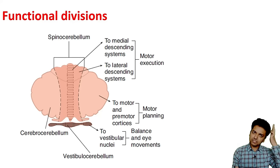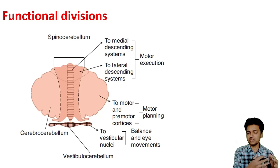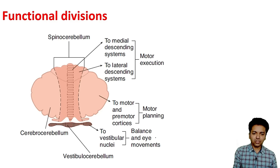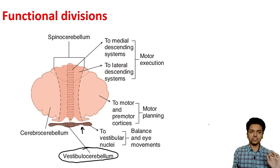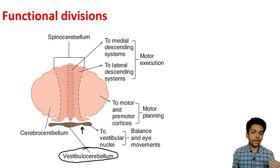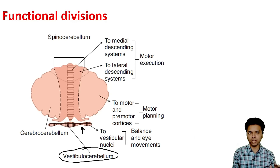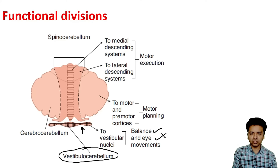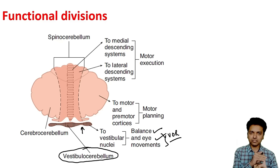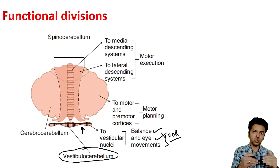The anatomical divisions are entirely different from the functional divisions. Only one thing is similar — the flocculonodular lobe is now called the vestibulocerebellum. It is called so because this part has extensive connections with the vestibular apparatus and vestibular nucleus. Its main functions are maintenance of balance and the vestibuloocular reflex.